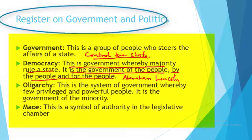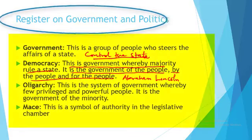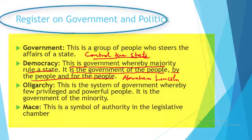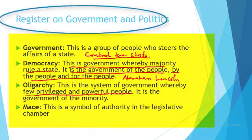Then we have oligarchy. Oligarchy is simply a system of government where a few privileged and powerful people rule. It is not everyone — only those that are privileged and powerful are in charge. Oligarchy is a system of government where few persons rule; it is government of the minority.